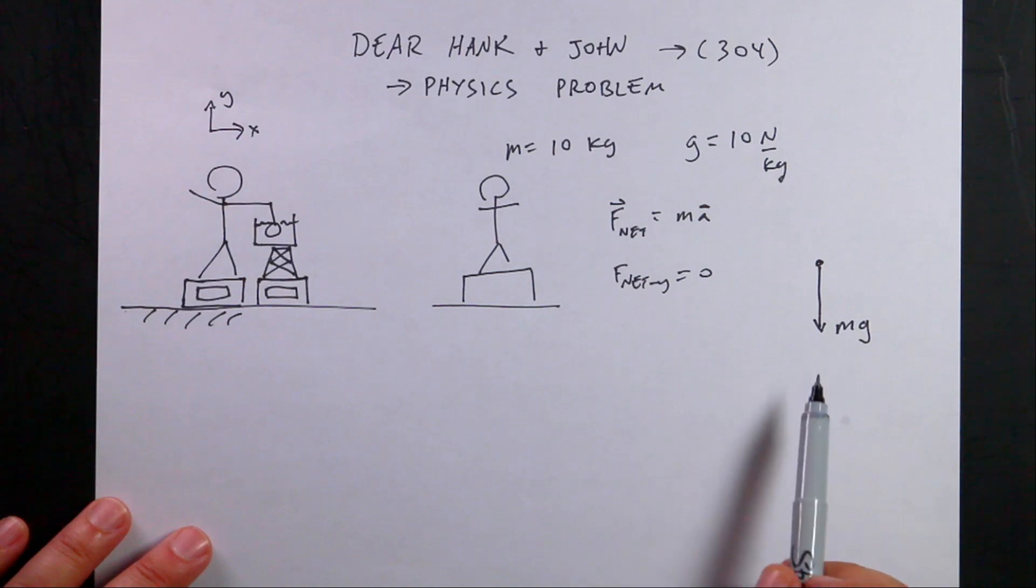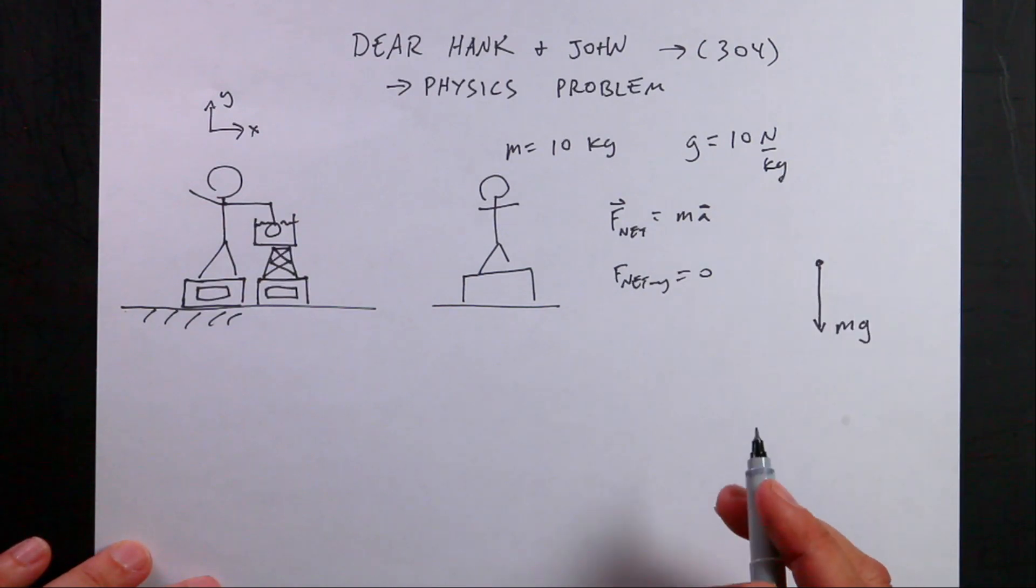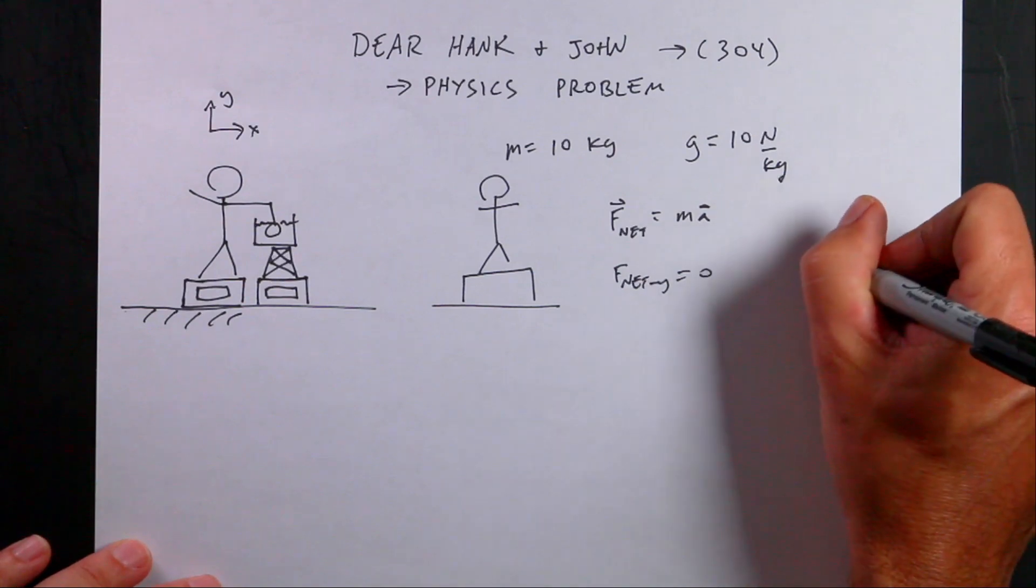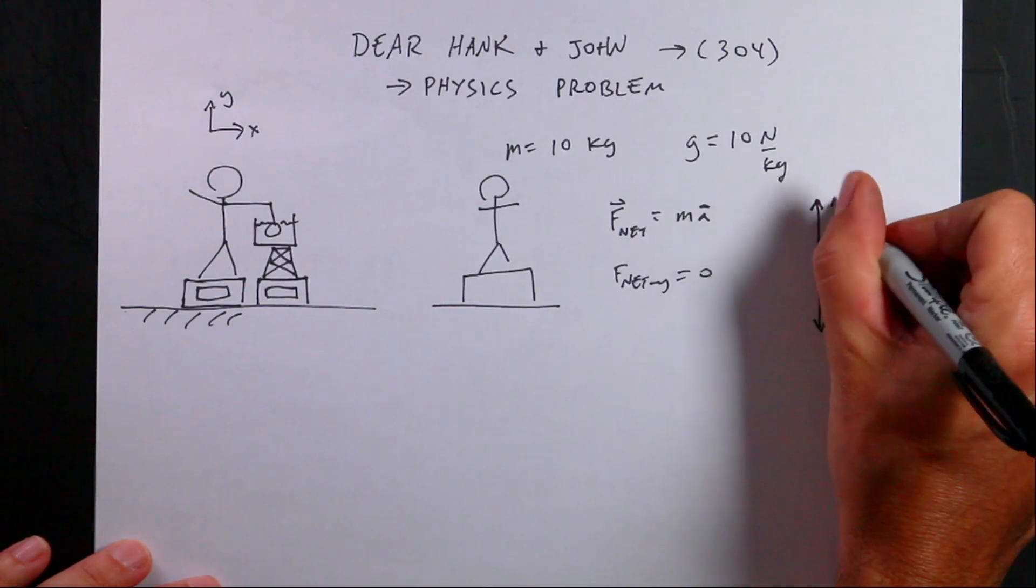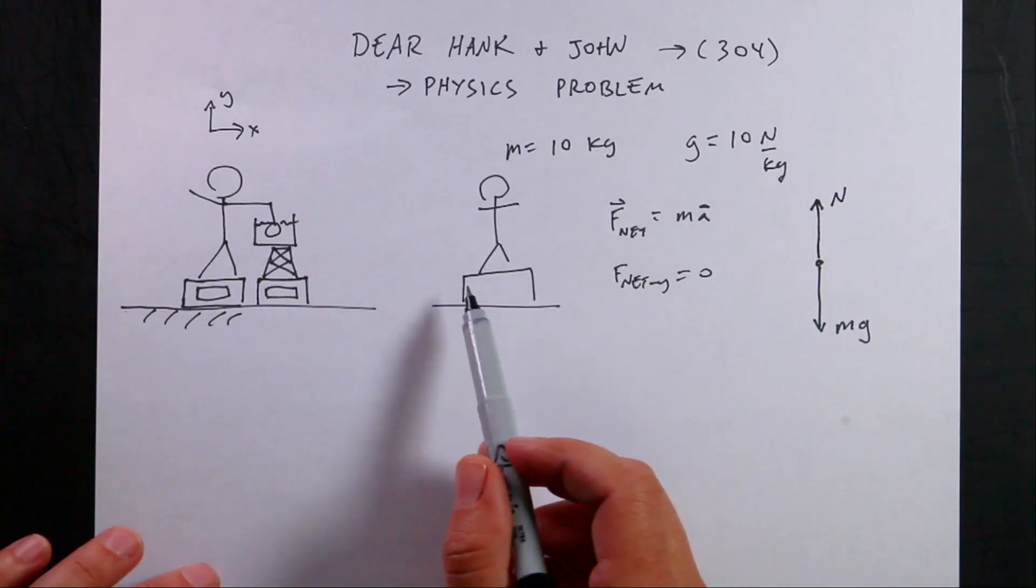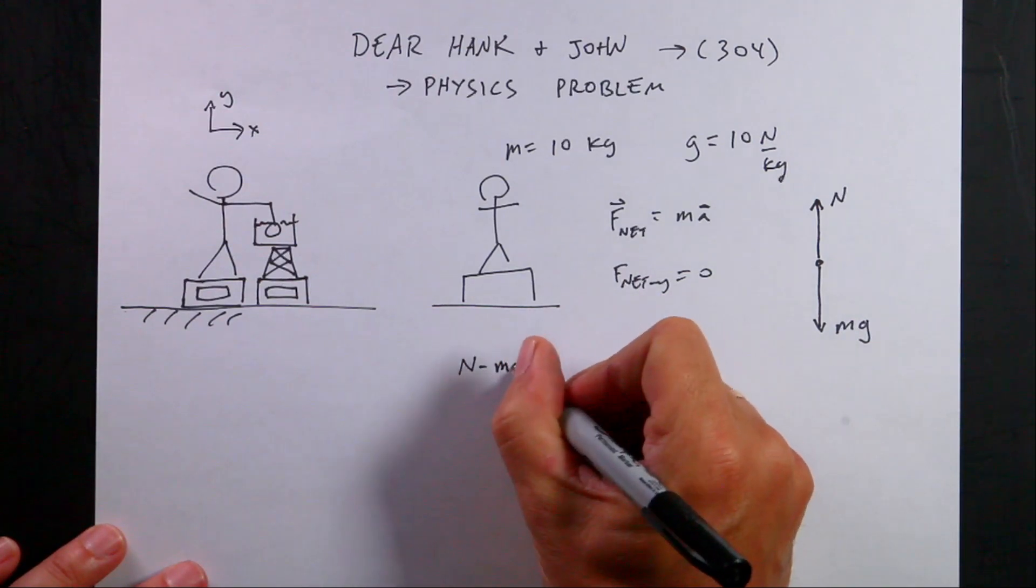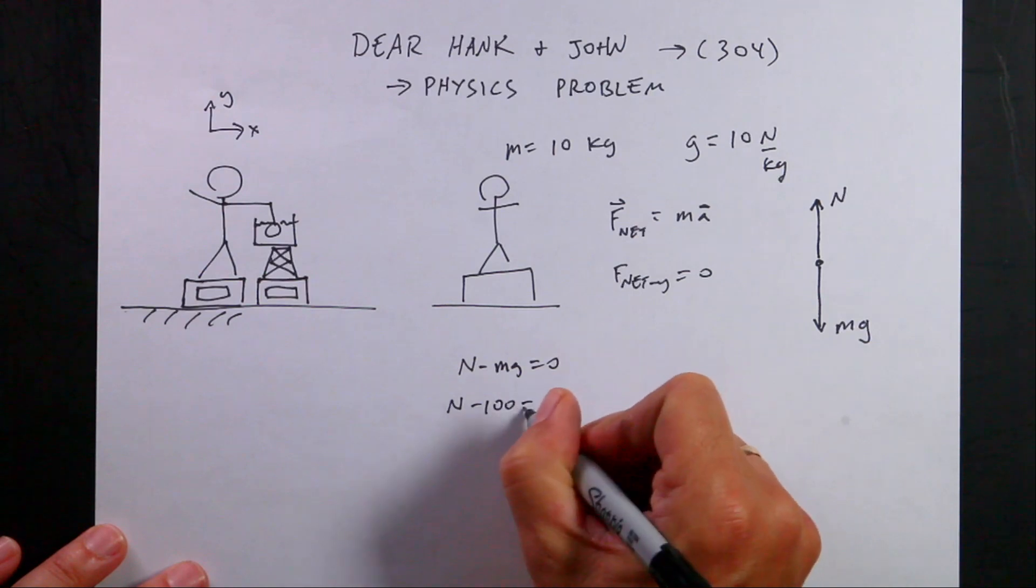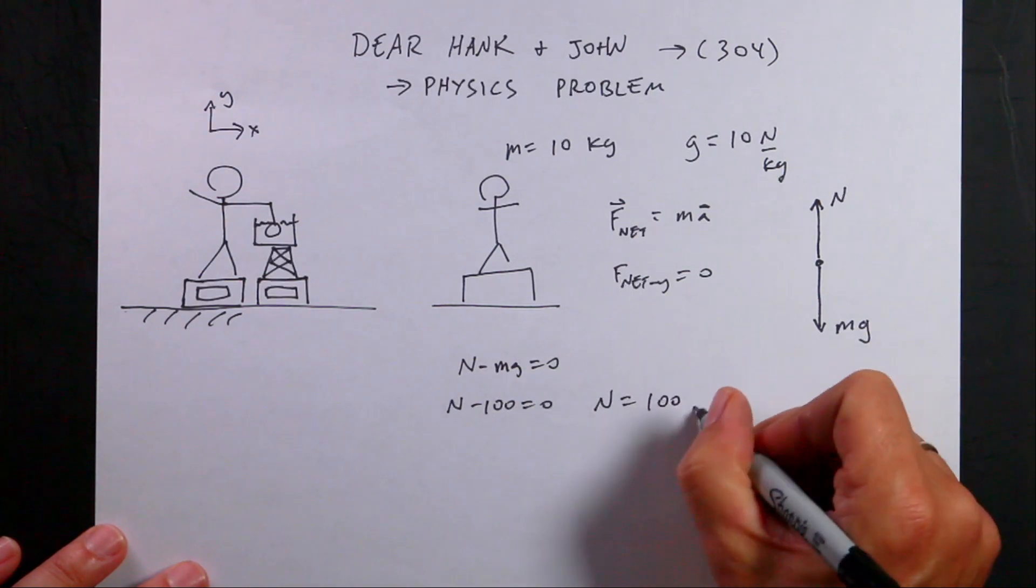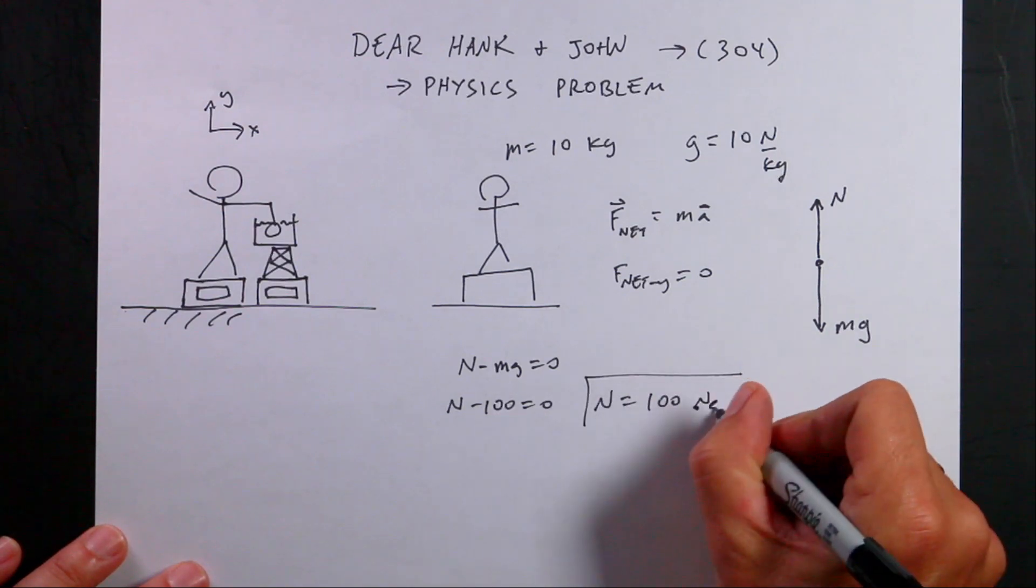What forces are on the person? There's the long-range gravitational force, so I have a downward gravitational force, mg down. The gravitational force on a person is the mass times the gravitational field, so this would be 100 newtons pulling down. The only way that can happen is an upward 100 newton force from the scale. We call this a normal force because it's perpendicular to the surface. So n minus mg equals zero, n minus 100 equals zero, n equals 100 newtons.